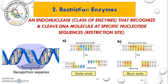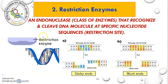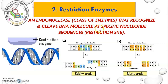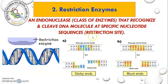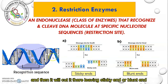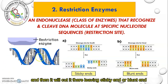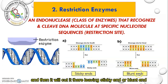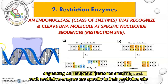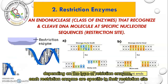Next is the restriction enzyme. The restriction enzyme is an endonuclease — a class of enzyme that recognizes and cleaves DNA molecules at specific nucleotide sequences called the restriction site. This enzyme will recognize the restriction site and cut it there, leaving either a sticky end or a blunt end depending on the type of restriction enzyme. Each restriction enzyme is specific to its restriction site.